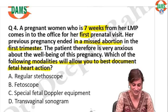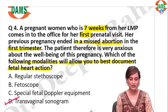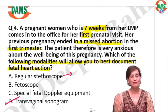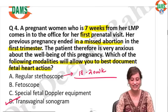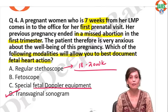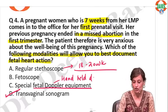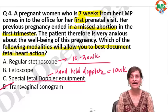The answer for this question is D — transvaginal ultrasound. A regular stethoscope or fetoscope will let you hear heart sounds only between 18 to 20 weeks, not earlier. A special hand-held Doppler can pick up heart rate at around 10 weeks. So the hand-held Doppler cannot pick up heart rate at 7 weeks.